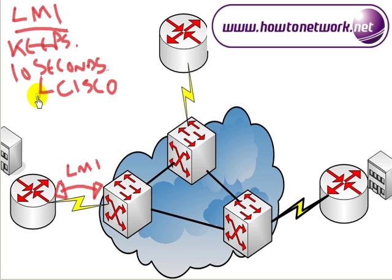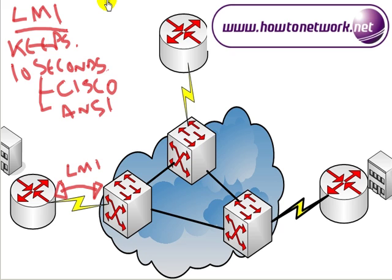The next type of LMI is ANSI. The ANSI LMI type is defined by a standard known as T1.617, commonly called Annex D. ANSI is the most common type of LMI found across frame relay networks.